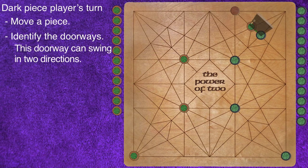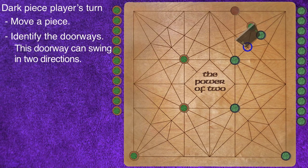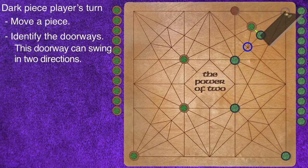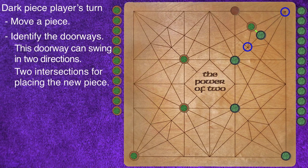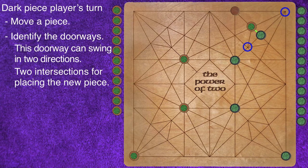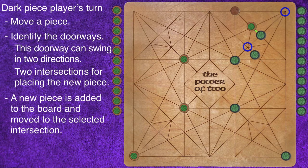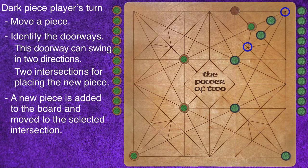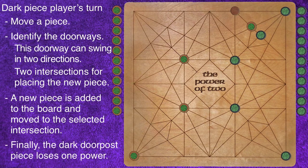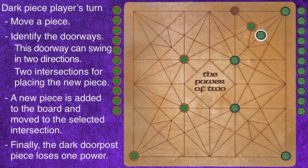Notice that this doorway can swing in two directions. This gives the player two locations to place the new piece. The new piece is added to the board and moved to the selected intersection. Finally, the dark doorpost pieces lose one power.